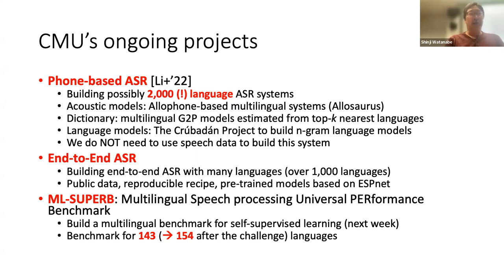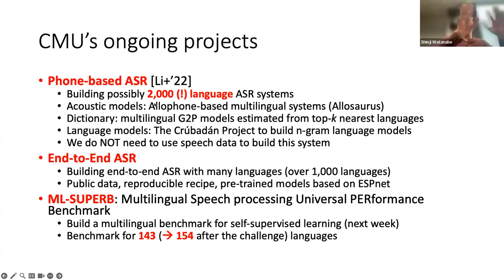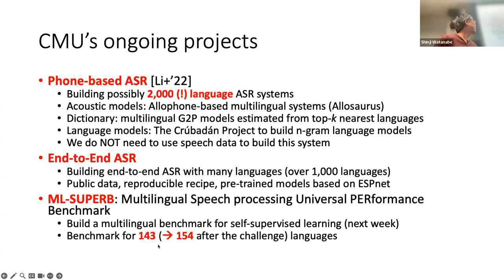We are actively working on multilingual speech recognition programs. In addition to this work, we also recently launched a new benchmark called the Multilingual Speech Processing Universal Performance Benchmark, or ML SPARB. This is an extended version of the SPARB project for the multilingual side, currently starting from 143 languages and expanding to 154, gradually covering many more languages for research and development.